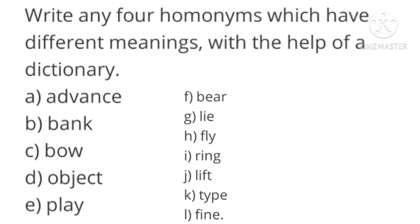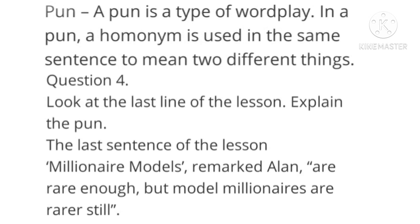Write any four homonyms with different meanings using a dictionary. You can write: bank — where money is deposited / the riverside (river bank); bow — the archer's bow / bowing (bent down); object — persons of a place / a thing. Other homonyms you can use: advance, bank, bow, object, play, bear, lie, fly, ring, lift, type, find, etc. Next is 'pun.' In a pun, a homonym is used in the same sentence to mean two different things, to give more artistic value to the writing. Great writers like Shakespeare and Oscar Wilde often used puns to add fun and flavor to their writing.